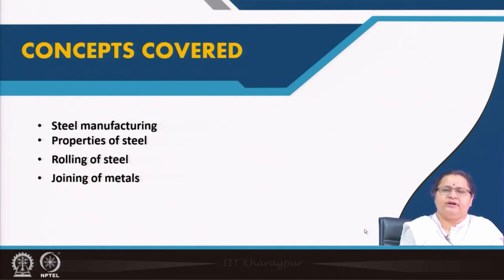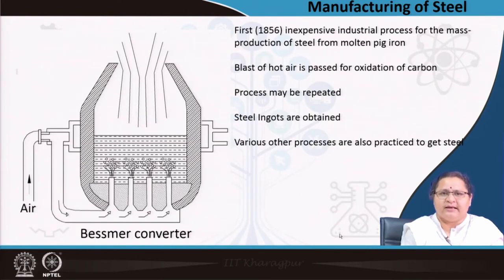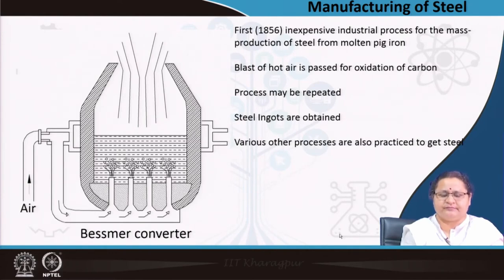We understood in our previous lecture that pig iron, extracted first in the blast furnace, was used for either making cast iron or wrought iron. The initial item for steel making is again pig iron. The first industrial production of steel started in 1856, and since then we find the replacement of cast iron and wrought iron by steel. Steel is now extensively used in building industries, bridges, highways, roadways, etcetera.